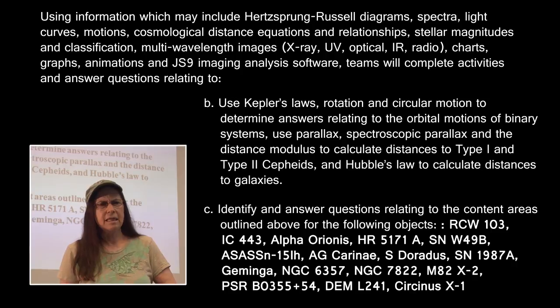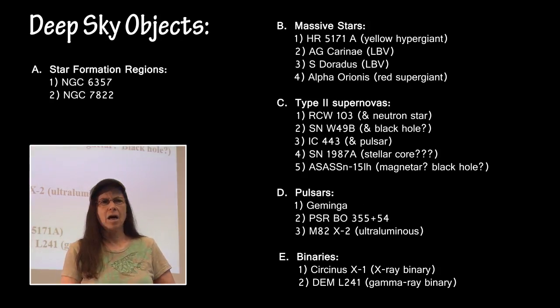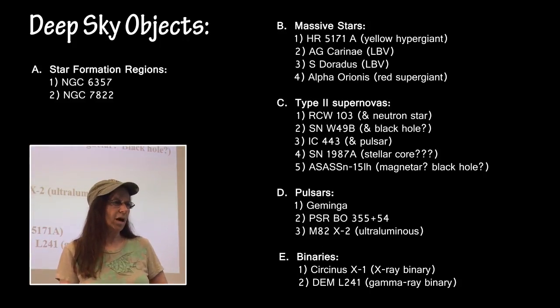We have 15 deep sky objects this year. If you arrange those deep sky objects into the type of object that they are: we have two star formation regions, four massive stars, five Type II Supernova remnant events, three pulsars, and two binaries—an X-ray binary and a gamma-ray binary. That does not mean that some of these other objects are not in binary systems because they are. For instance, HR 5171A is also in a binary system, but the most important part of that star is that it's a very rare yellow hypergiant, where the two binaries I've listed at the bottom are identified by their X-ray or gamma-ray binary system.